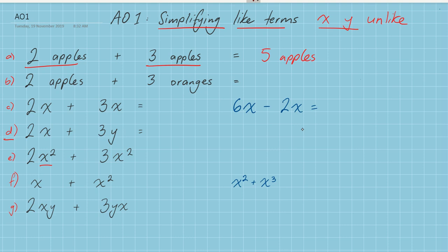What about if I'm dealing with a pile of two apples and a pile of three oranges? Can I simplify them together? Can I write it in an easier way? The answer is no. You can't add apples and oranges. So in this case, they're unlike terms. I can't simplify that. I'm going to leave it as two apples plus three oranges.